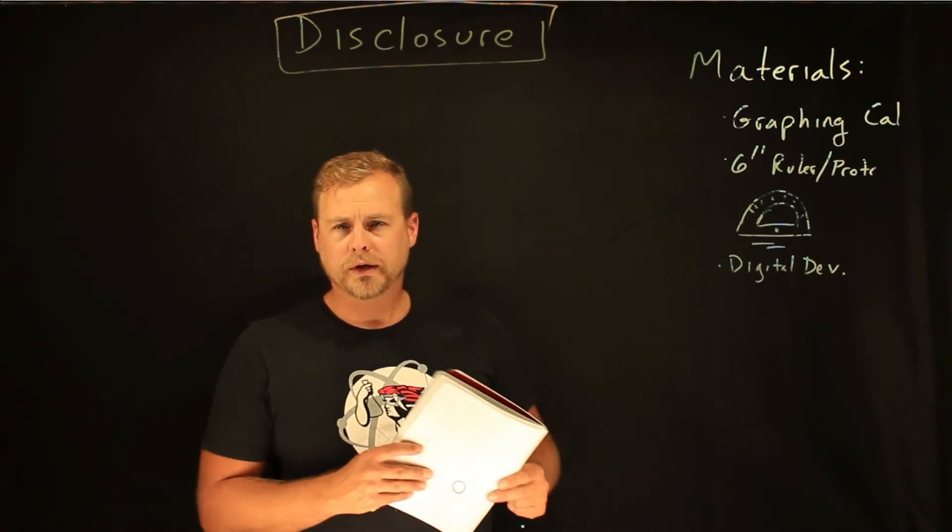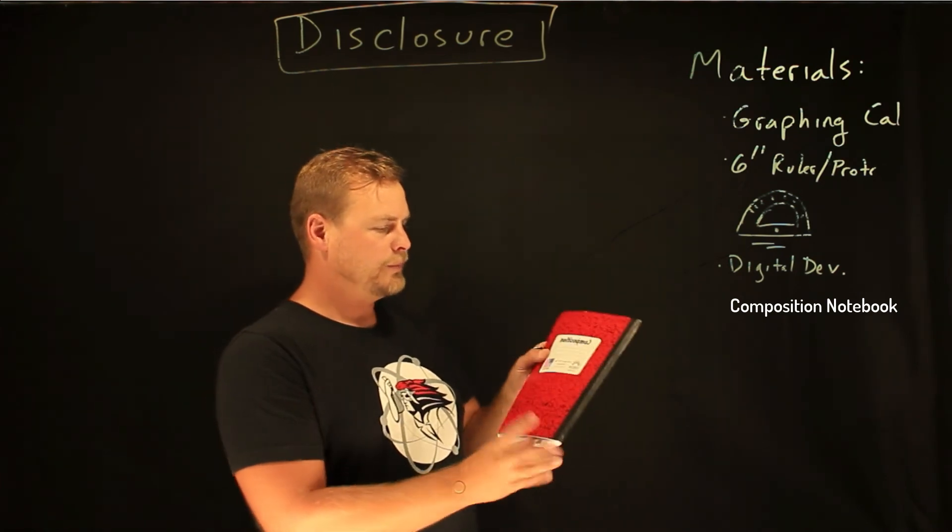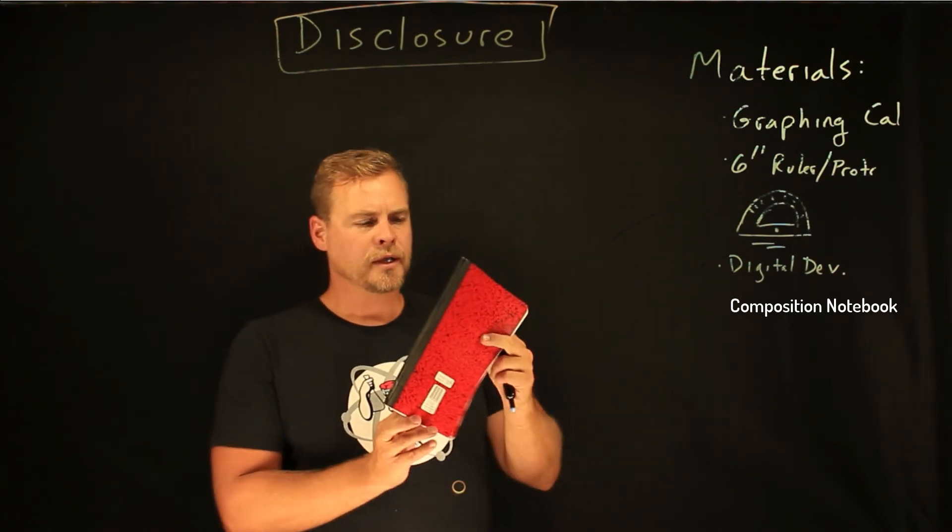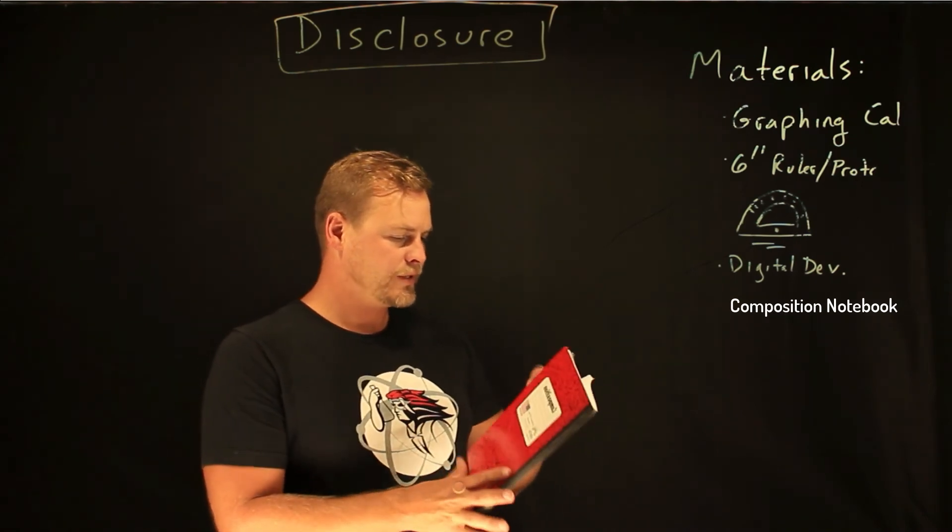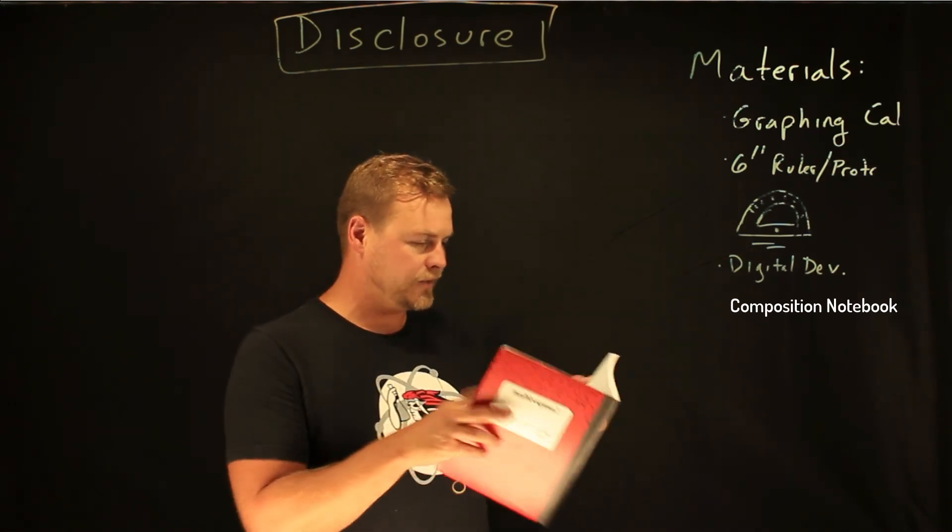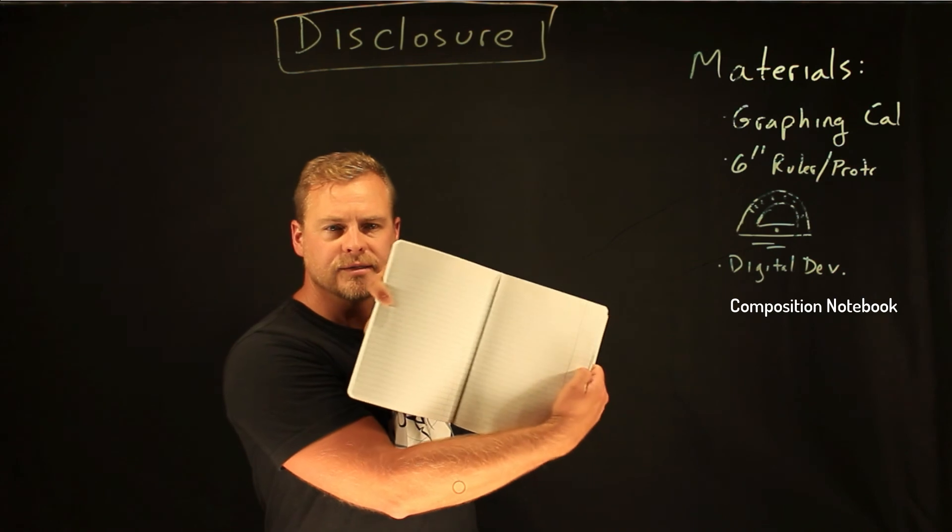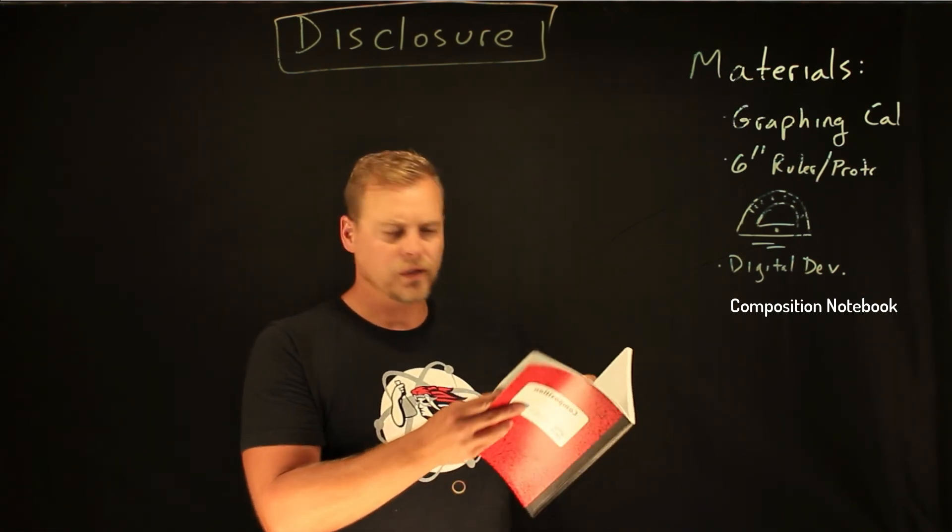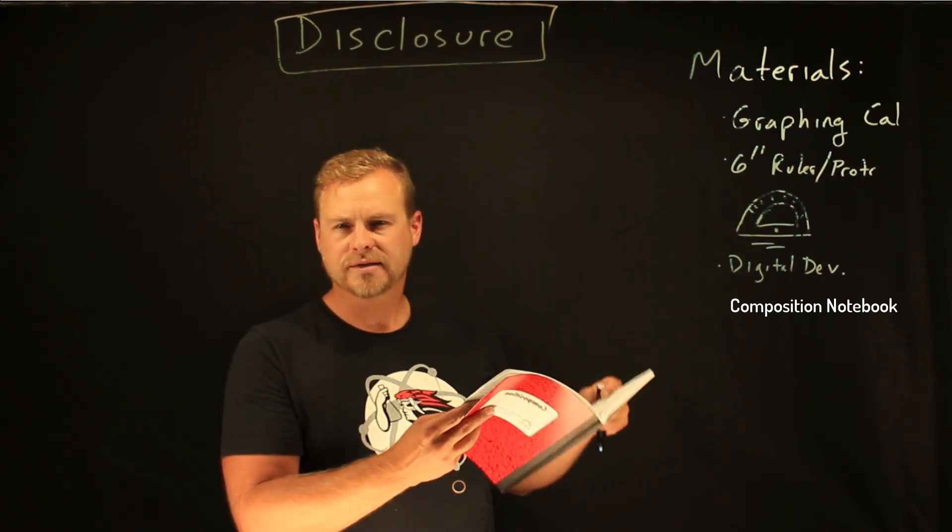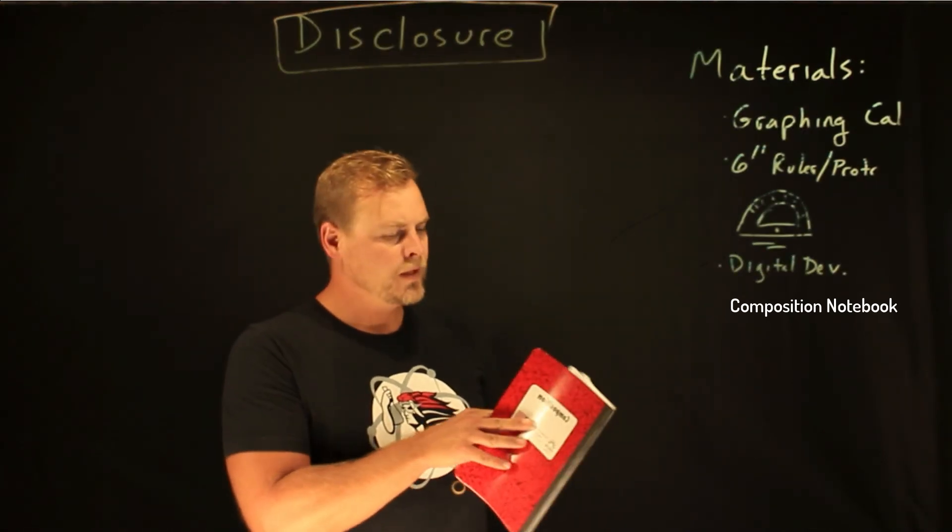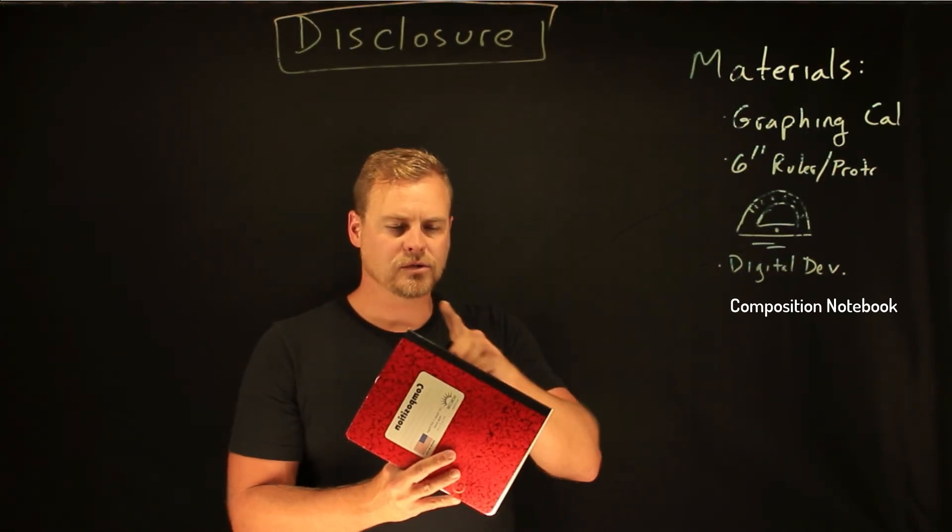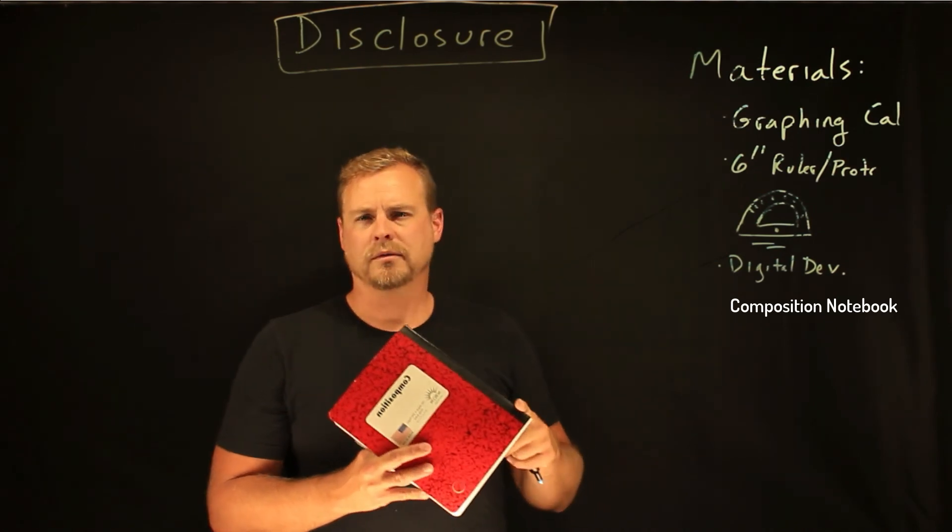You're going to need a notebook. These are the notebooks right here that we typically use. It's called a composition notebook. This one's 100 sheets or 200 pages. It doesn't matter. This is college ruled with the lines. You can get the ones with the graph paper, which I would suggest. We'll do a lot of graphing and table making. That usually makes life easier for you. But one thing that we do ask is that you have a sewn notebook.